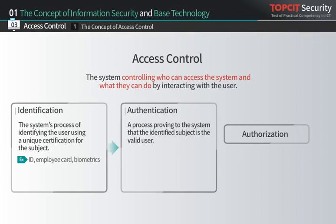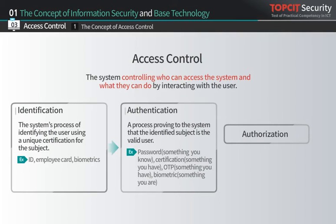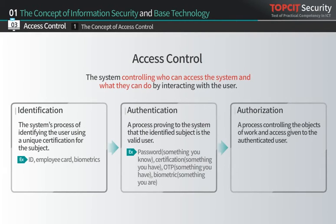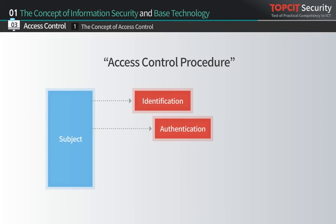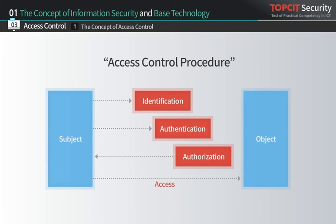Authentication is a process to prove to the system that the subject is the identified user, where the system acknowledges that the user is valid. In this process, knowledge-based passwords, ownership-based certifications, OTPs, and existence-based biometrics are used. Lastly, authorization is a process where the system controls the authenticated user's access to objects. Examples include mandatory access control, discretionary access control, and role-based access control. The access control procedure occurs in sequence: identification, authentication, and authorization, then providing the rights to access objects.